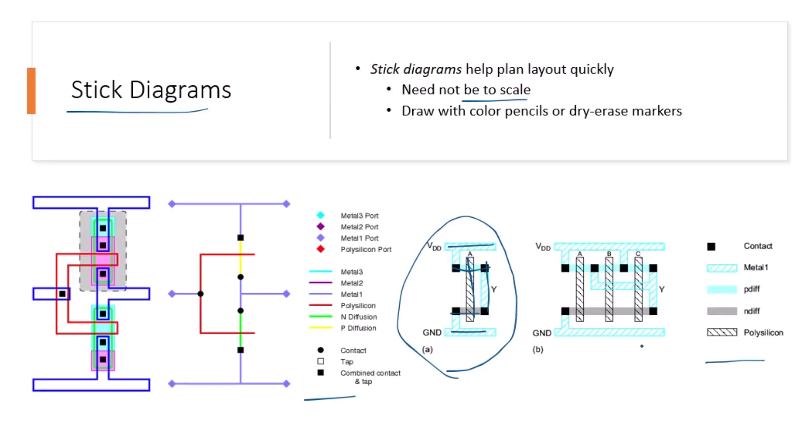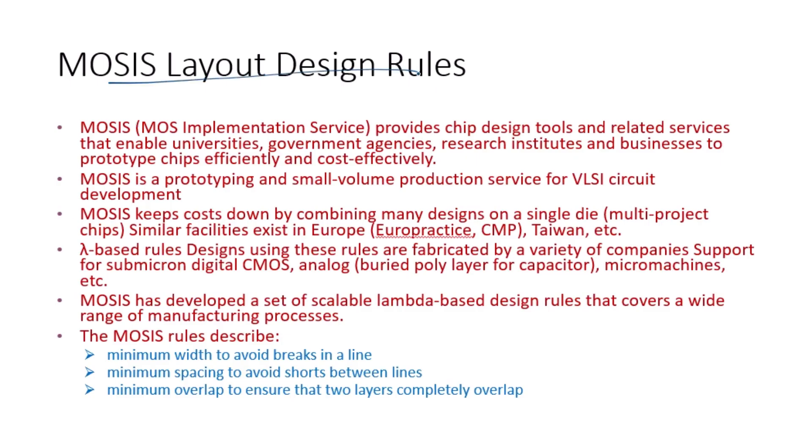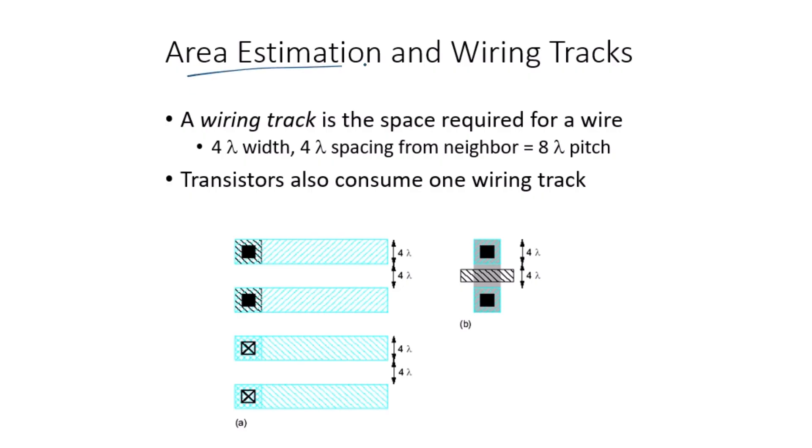Once your layout is planned, it is important to ensure that it complies with the Mosis layout design rules. Mosis provides a set of scalable lambda-based design rules that simplify the design process for different manufacturing technologies. These rules specify the minimum width, spacing, and overlap for different layers to avoid fabrication issues.